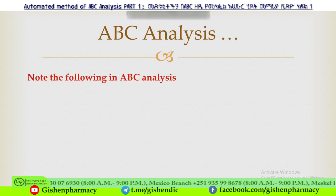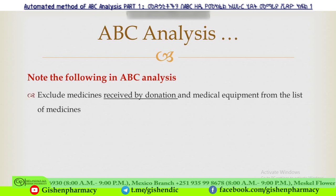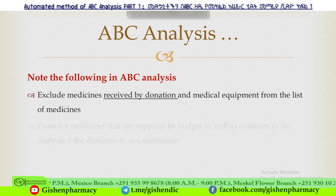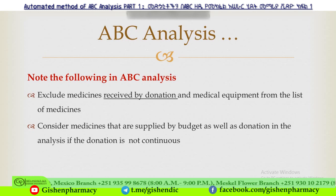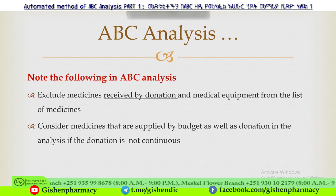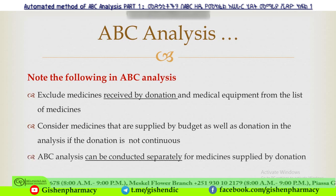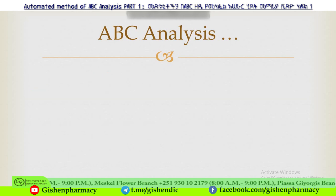Note on ABC analysis: we should exclude medicines received by donation and medical equipment from the list of medicines. Consider medicines supplied by budget as well as donation in the analysis if the donation is not continuous. ABC analysis can be conducted separately for medicines supplied by donation, and separately by service.